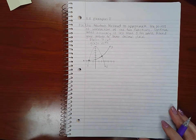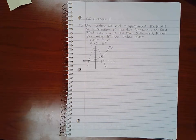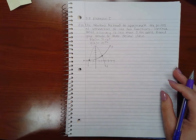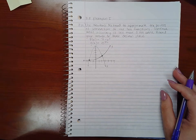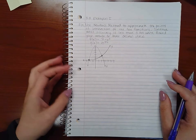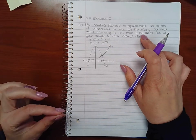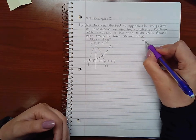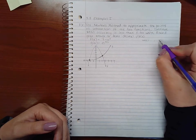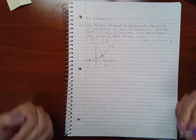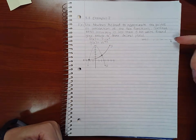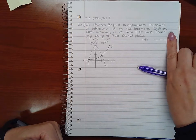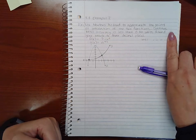So it says, use Newton's method to approximate the points of intersection of the two functions. Continue until accuracy is within less than 0.001 units. Round your answer to three decimal places. If I need to get it within 0.001 units, that means I need to keep doing the iterations until this fourth digit is exactly the same as the previous one. Because if that fourth digit is the same as the previous estimate, then I can round it and I will have a three decimal placed answer.